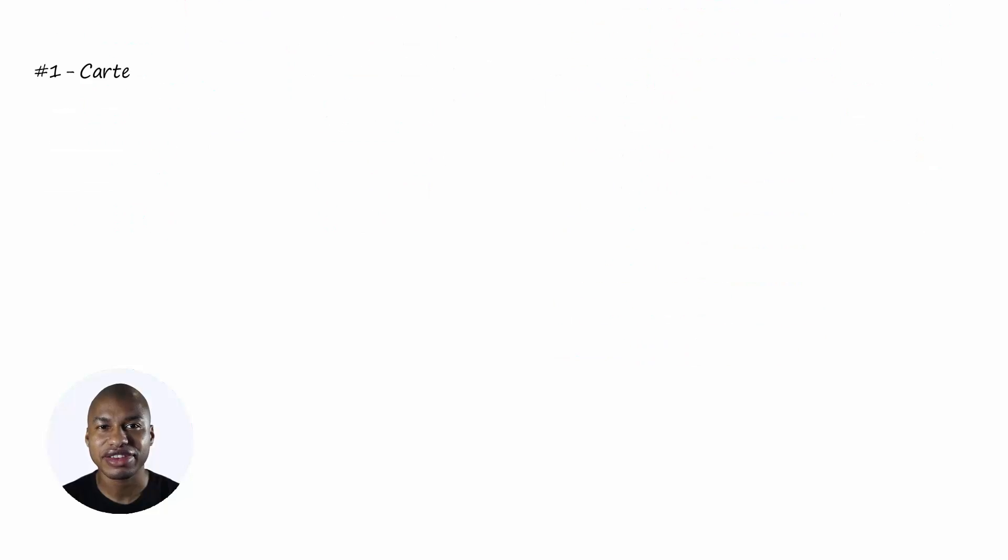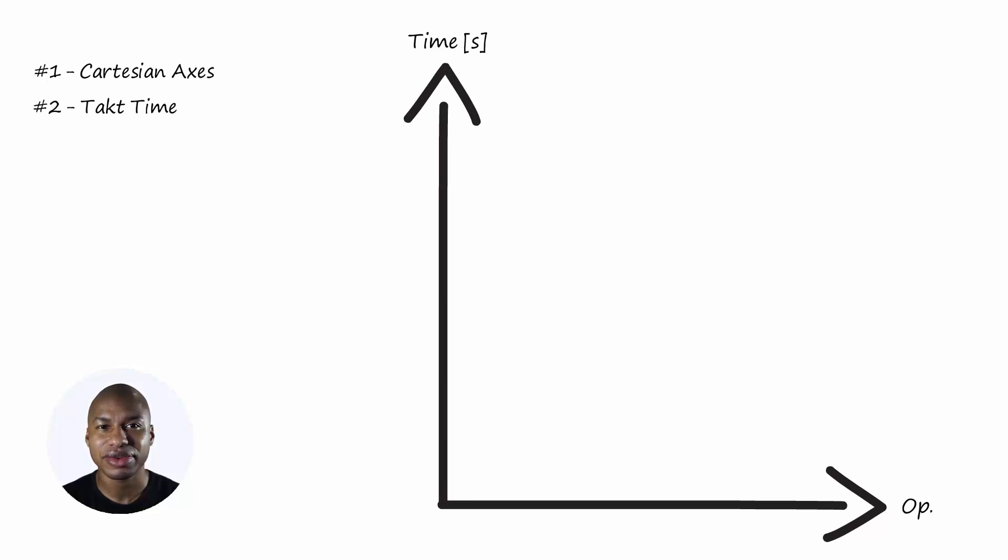Let's see how it is done in this image. Step 1: Draw a pair of Cartesian axes. Step 2: Draw a red line at the takt time.